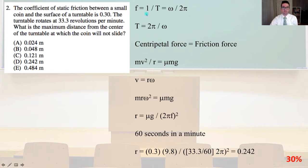So our frequency f equals 1 over T equals ω over 2π, and T equals 2π over ω. The centripetal force equals the frictional force in this problem for it to not slide. So mv² over r equals μmg, where μ is our coefficient of friction. And v equals rω.